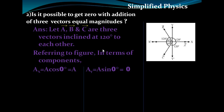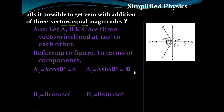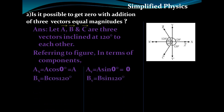Now express each vector in terms of its components. Vector A can be expressed as: the x-component A_x equals A cos(0°), because vector A makes angle 0° with the x-axis. Similarly, A_y equals A sin(0°) equals 0.